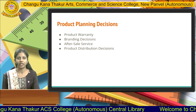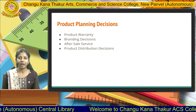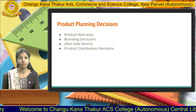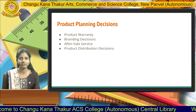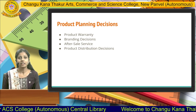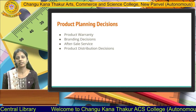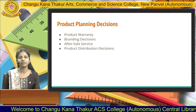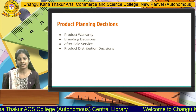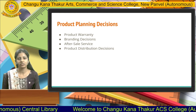Then we have product warranty — what all warranty we have to keep for a product, whether one year or two year warranty based upon the features of the product. Then we have branding decision, which is an important concept to be studied next. Then we have after-sale service — what all services are required after the sale. Then we have product distribution decision — how the product should be distributed. Nowadays we have e-logistics where the manufacturer focuses only on production and the distribution part is handled by logistics management.